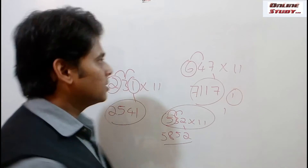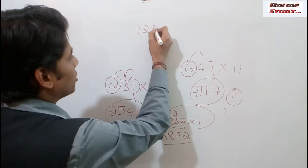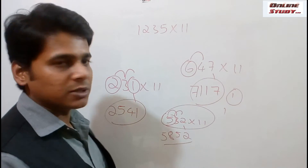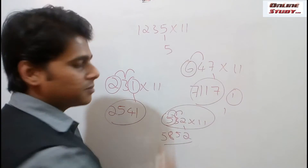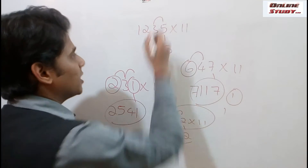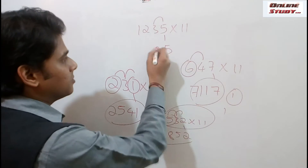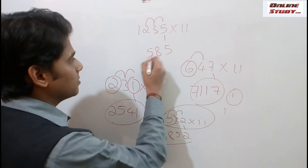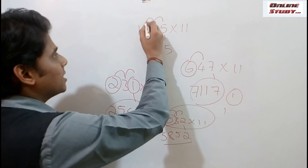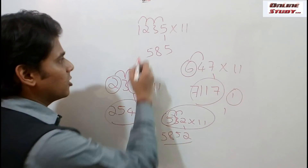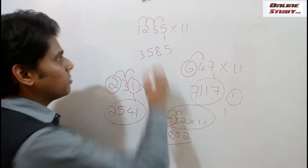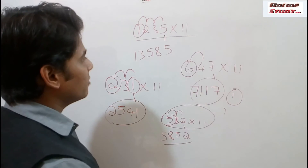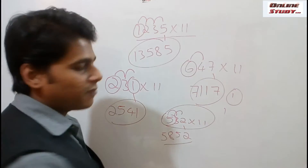We shall take another example with 4-digit numbers: 1235 into 11. Place 5 as it is. Now add 5 plus 3, that is 8. The next step is add 3 plus 2, that is 5. The next step is add 2 plus 1, that is 3. Now place 1 as it is. So the multiplication of 1235 into 11 is 13585.